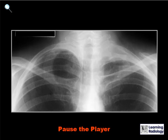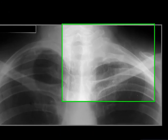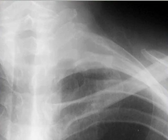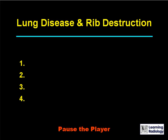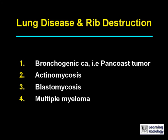Here's the next differential. The differential is lung disease with associated rib destruction. There are four causes. The four causes of lung disease with associated rib destruction include bronchogenic carcinoma such as a Pancoast tumor, actinomycosis, blastomycosis, and multiple myeloma.